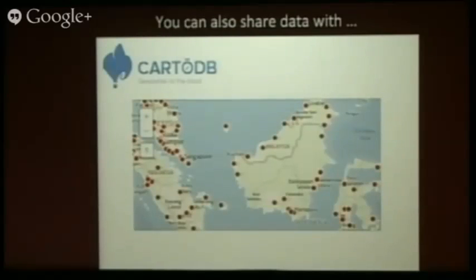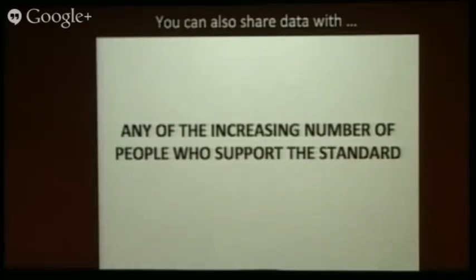You can also share data using Darwin Core Archive with CartoDB, which is an open geospatial analysis tool — you can send your specimen data out to it, it can read the Darwin Core Archive and do mapping things. You can also send to any one of the increasing number of people who support the standard. For once, we have found a standard in this field. The Darwin Core Archive has really revolutionized — or made a hugely important contribution to — biodiversity informatics, simply by enabling us to share data in a common way.